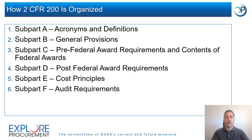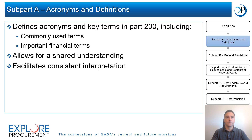2 CFR 200 is organized into six subparts. Subpart A spells out acronyms and defines key terms used throughout the regulation, such as grant agreement, recipient, acquisition cost, and indirect costs. These definitions provide federal agencies and award recipients with a shared understanding of terms and concepts and facilitate consistent interpretation of the regulation.